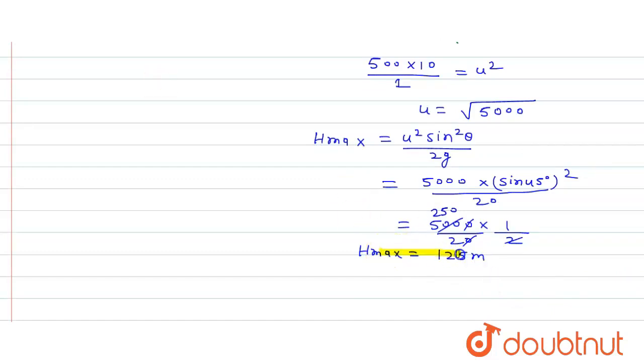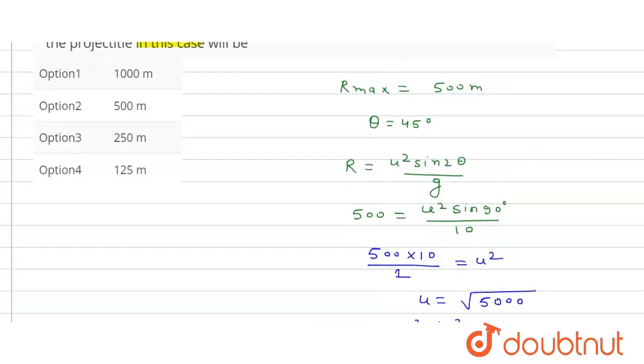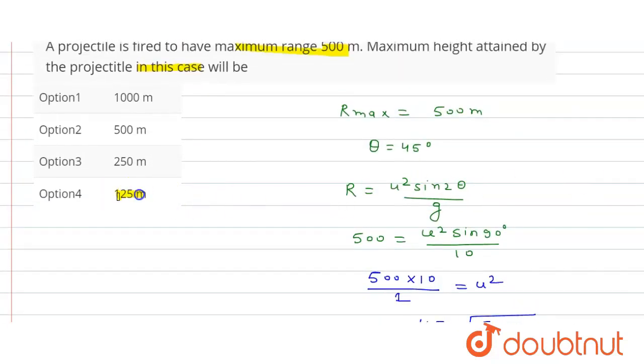So this will be the value of H max, 125 meters. Option D is the correct option. Thank you.